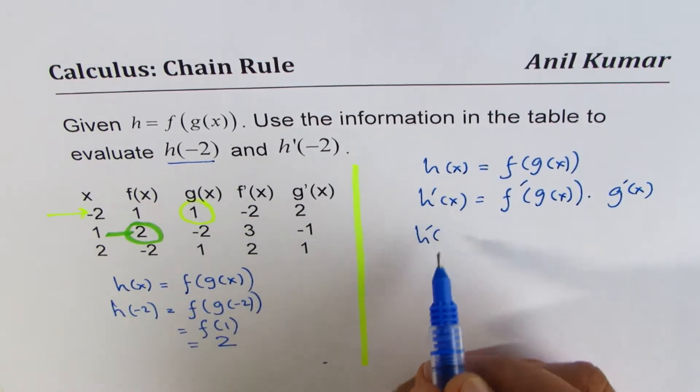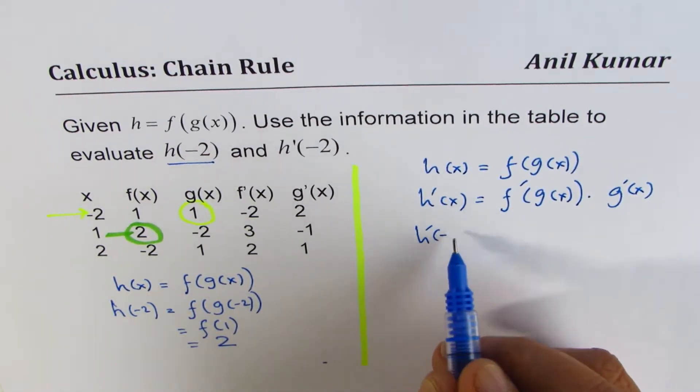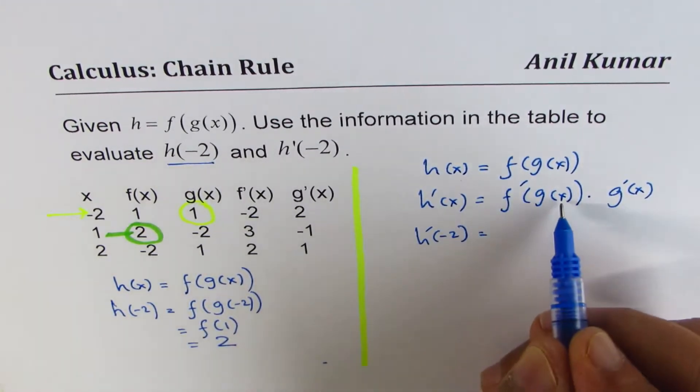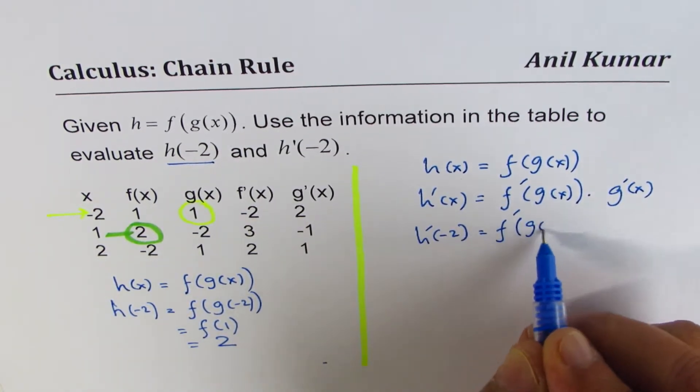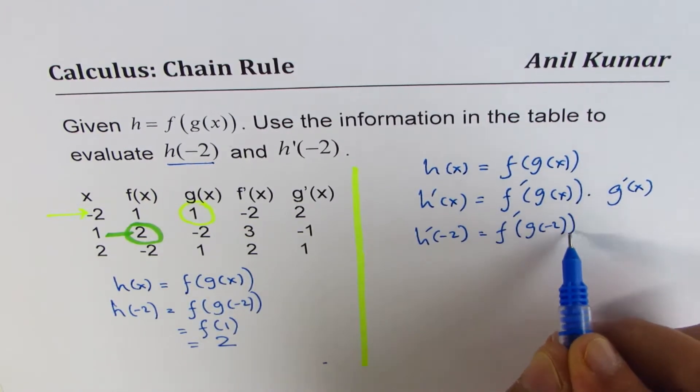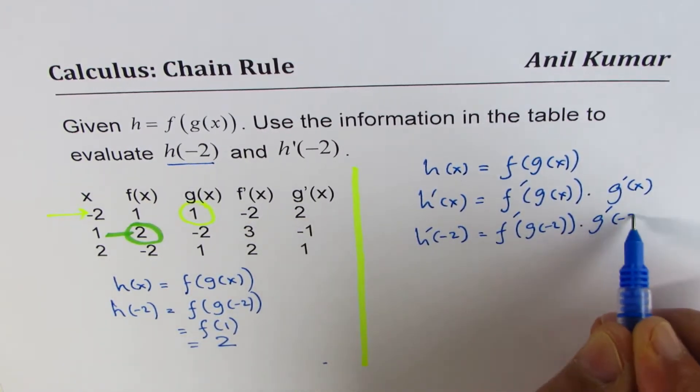Now, since we need to find derivative of x at minus 2, let's substitute x by minus 2. So we get f prime g of minus 2 times derivative of g at minus 2.